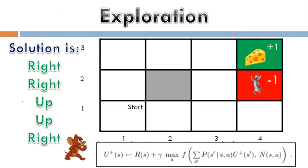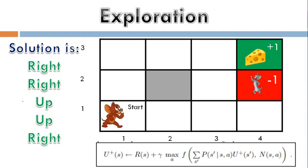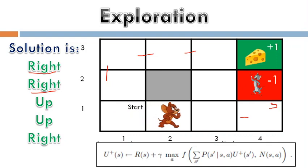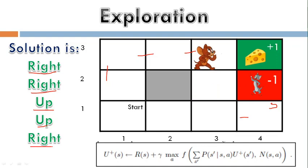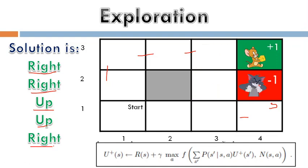Starting from the start position, the solution involves taking right, right, right, then up, up, up, and right — this is the best solution. Through exploration and practicing everything, the agent gains experience. Based on that experience, the agent learns the shortcut — the optimal route — to reach the goal, like Jerry finding the best route to eat the cheese.